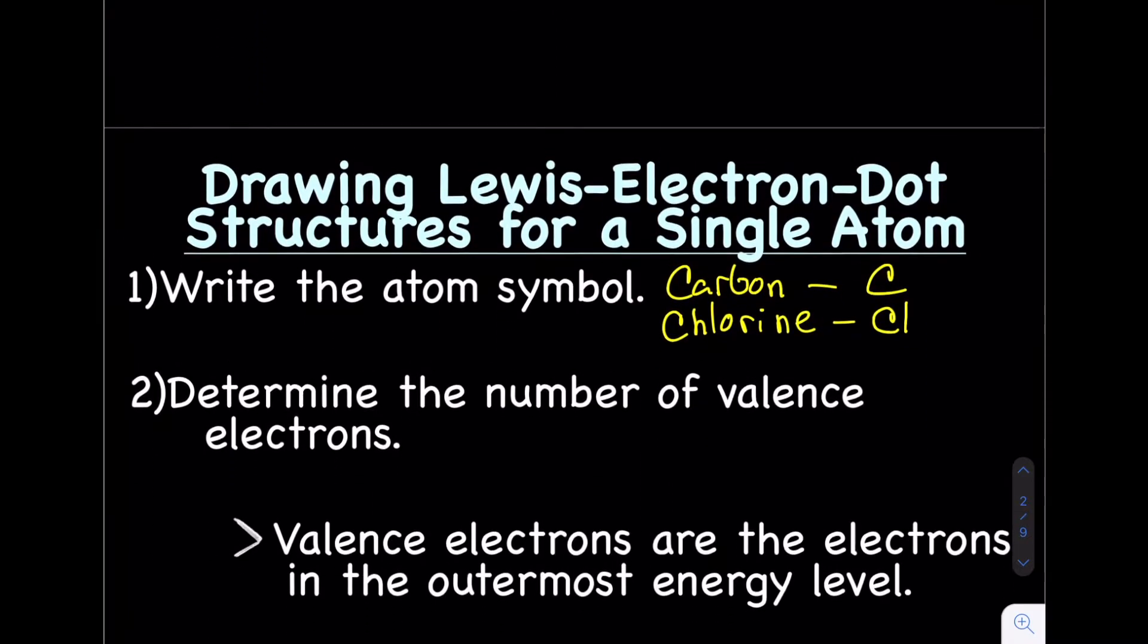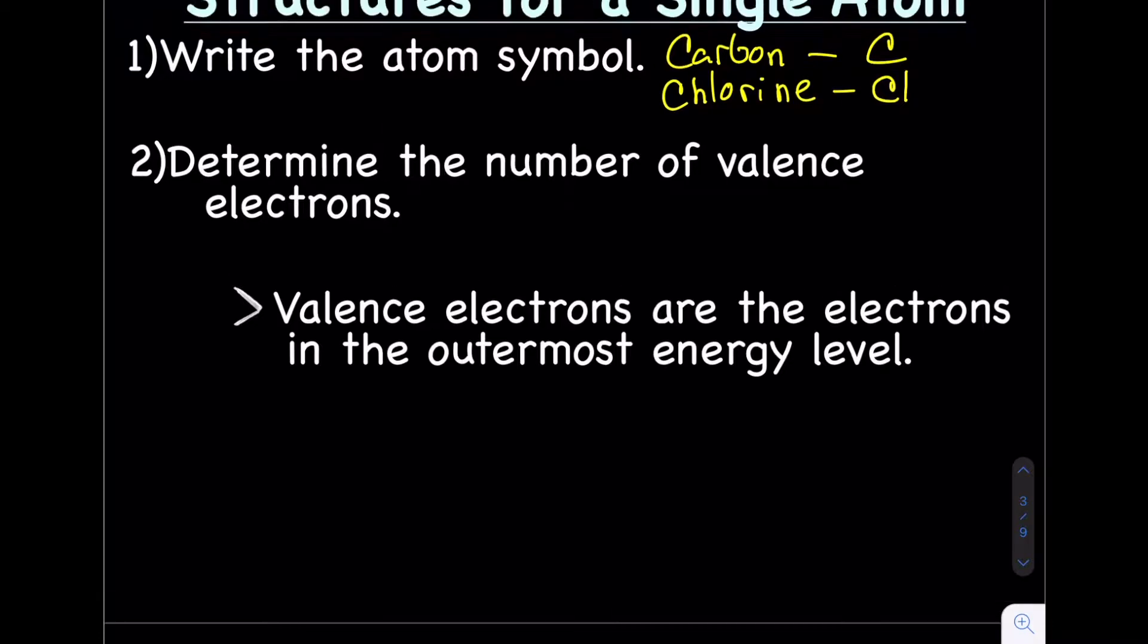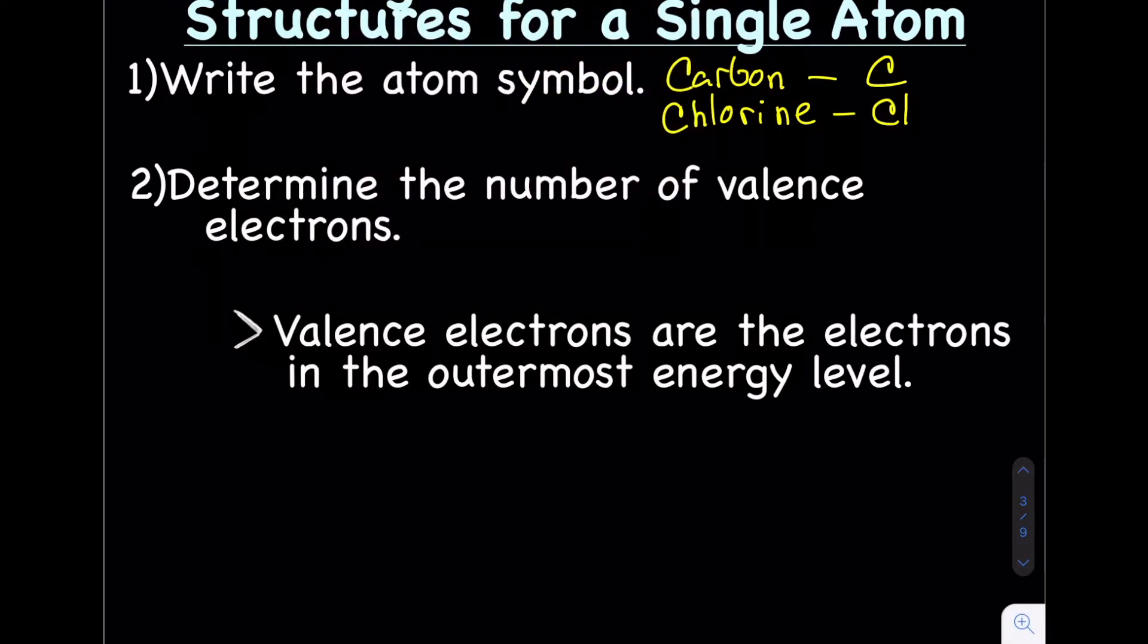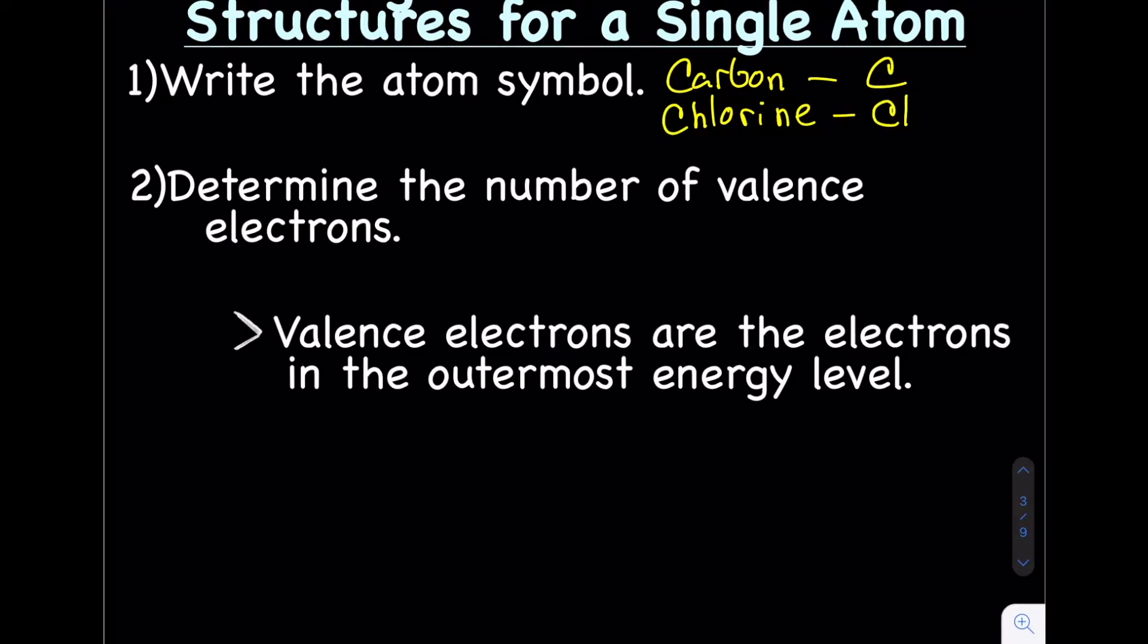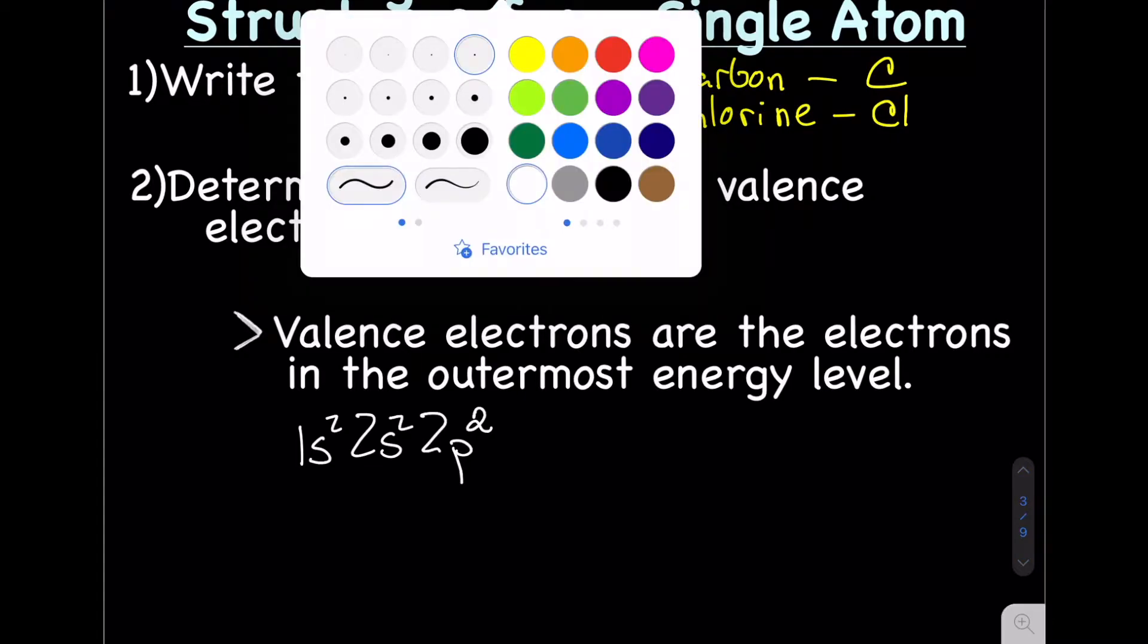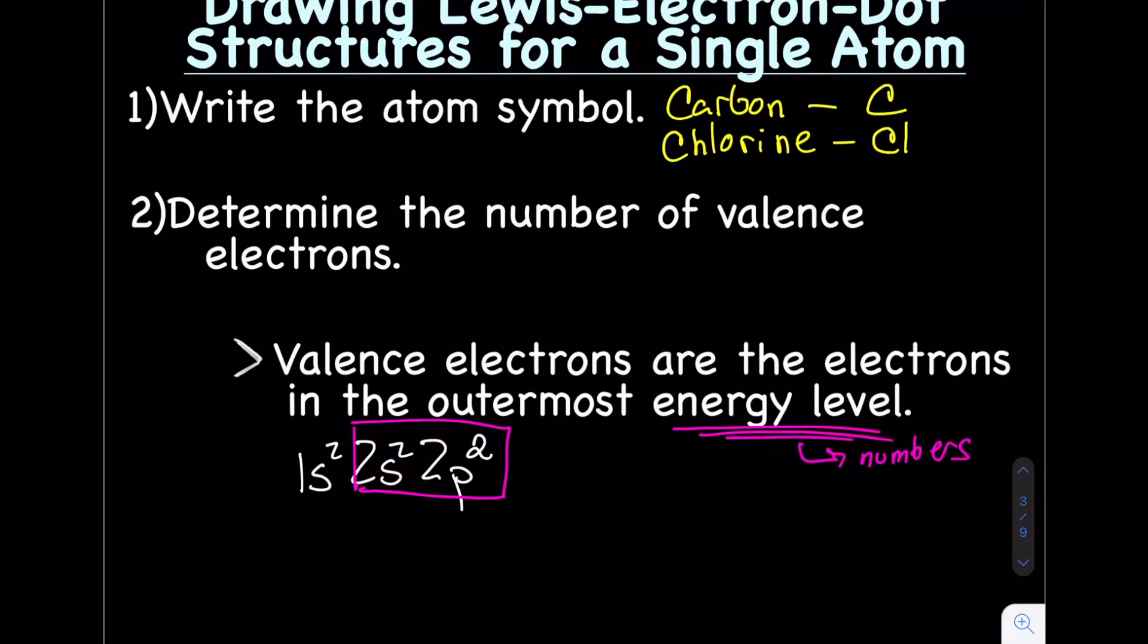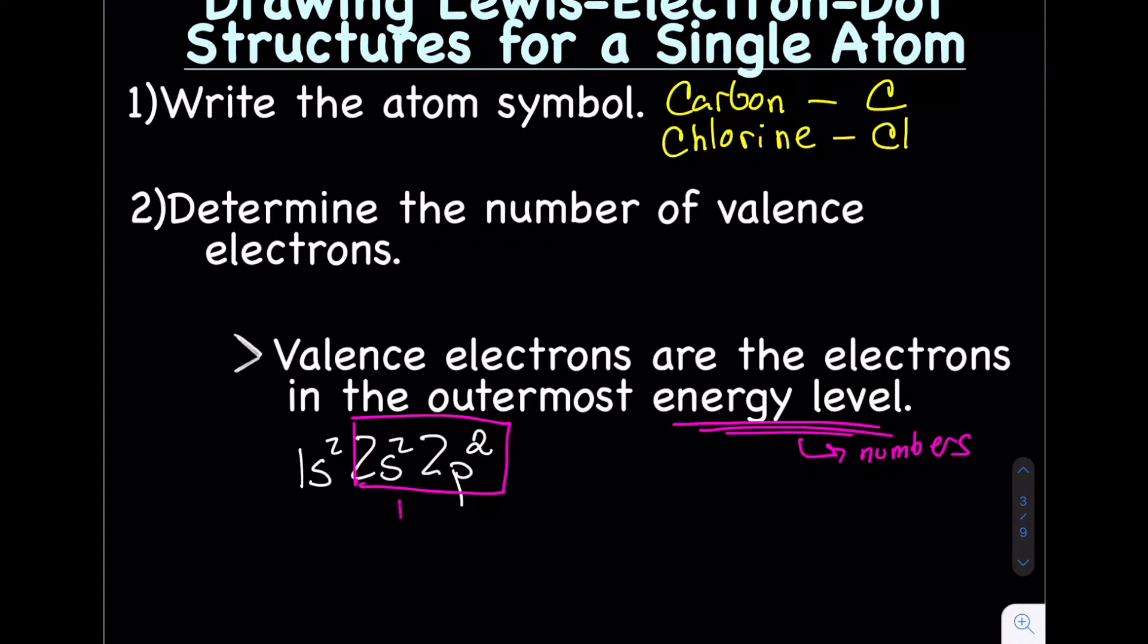Step two is to determine the valence electrons. The valence electrons are the electrons in the outermost energy level. Let's practice that. I'll draw out an electron configuration for carbon. 1s2, 2s2, 2p2. Valence electrons are the electrons in the outermost energy level. The energy level is represented by numbers, the big coefficients. So the outermost energy level is the 2. The valence electrons are 2s2, 2p2. There are a total of 4 valence electrons.